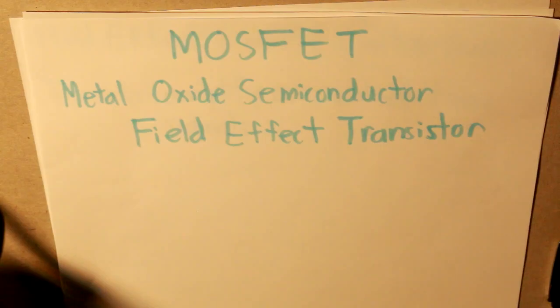Hello everybody, this is a very simple video on what a MOSFET is and does. A MOSFET is a metal oxide semiconductor field effect transistor, and this is what it looks like.